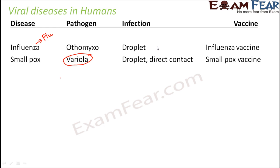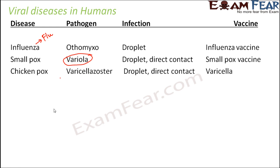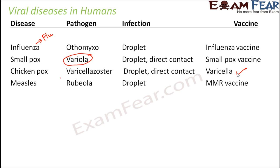Chickenpox is caused by the varicella zoster virus, and a vaccine called the varicella vaccine is available. The mode of infection is the same — droplet infection. Measles is caused by the rubeola virus, also spreads through droplet infection, and the vaccine available is the MMR vaccine. Measles is also known as rubeola disease because it is caused by the rubeola virus.